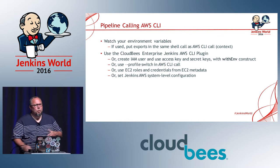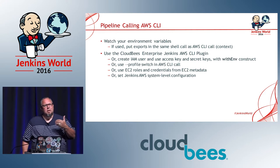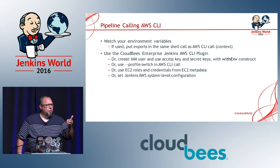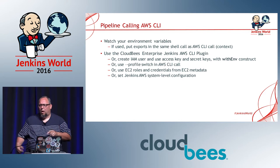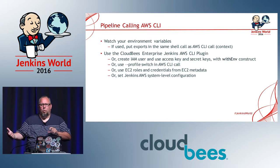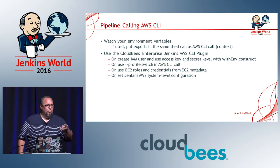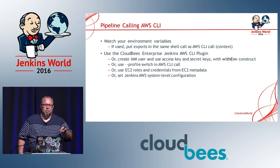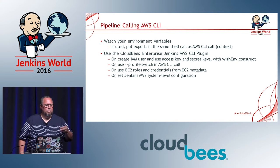There are several different ways. You can even, inside your Jenkins job, reach out and call that curl command to get the metadata for that role, which will bring back the three things you need: your access key, your secret key, and your token — because you're using STS to return that information. Then you use all three of those to make your call to AWS.